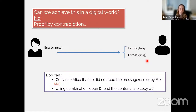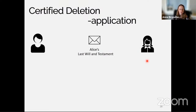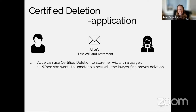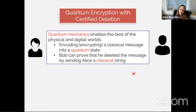I want to talk about a possible application of certified deletion. Alice can use certified deletion to store her will with a lawyer — encrypted, with the key possibly secret-shared among her executors. Suppose she wants to update her will: there's sensitive information and she doesn't want the initial version ever known. She could first ask the lawyer to prove deletion and then store a new version. That will make sure nobody will ever know what was in the first will — assuming of course she doesn't pass away in the meantime. The quantum solution enables the best of the physical and digital worlds.